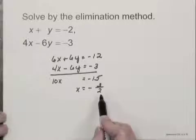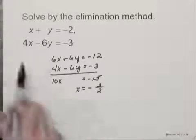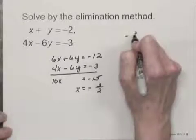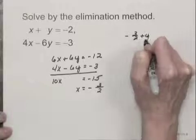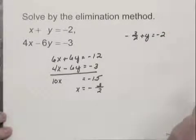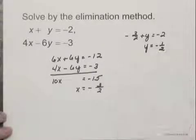Now I substitute negative 3 halves for x in either one of these equations and find y. I'm going to use the first equation. So I would have negative 3 halves plus y equals negative 2. When I add 3 halves on both sides, I get y equals negative 1 half.